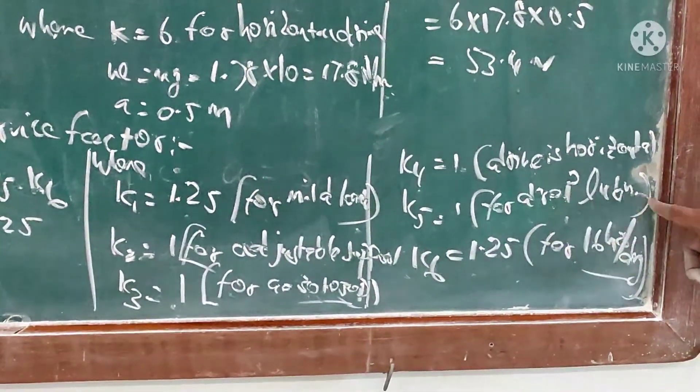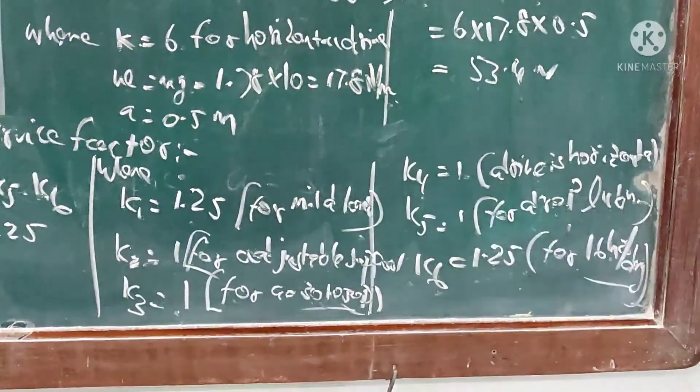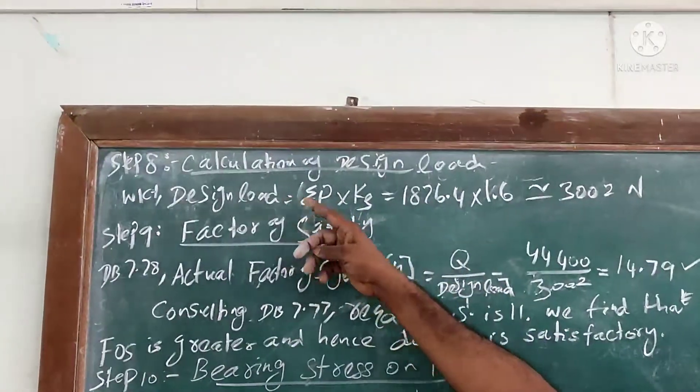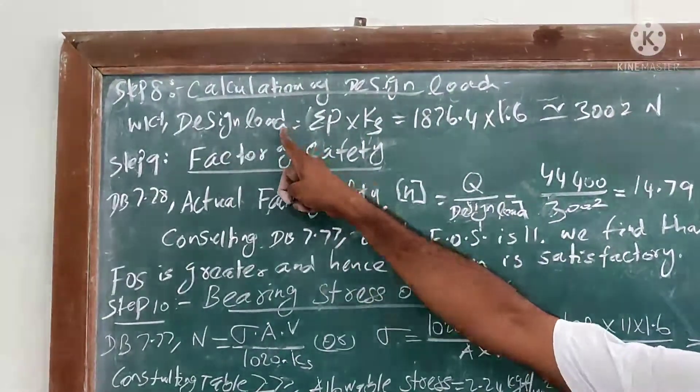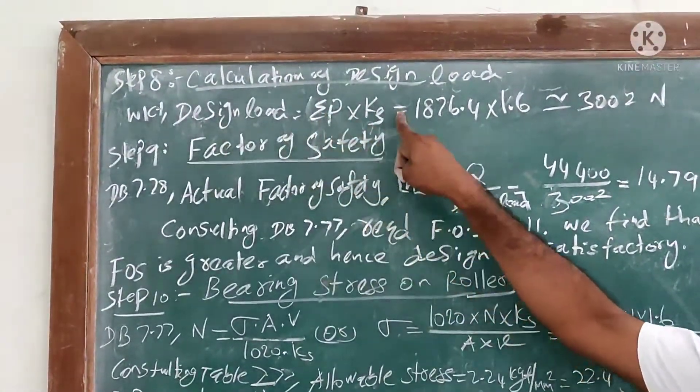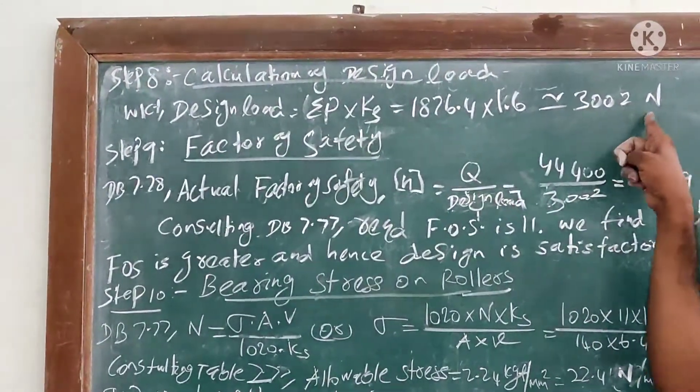K5 = 1 for drop lubrication system, K6 = 1.25 for 16 hours per day. Next step is calculation of design load. We know the formula: design load = σB × service factor. Multiply these two values, we can get 3002 Newton.